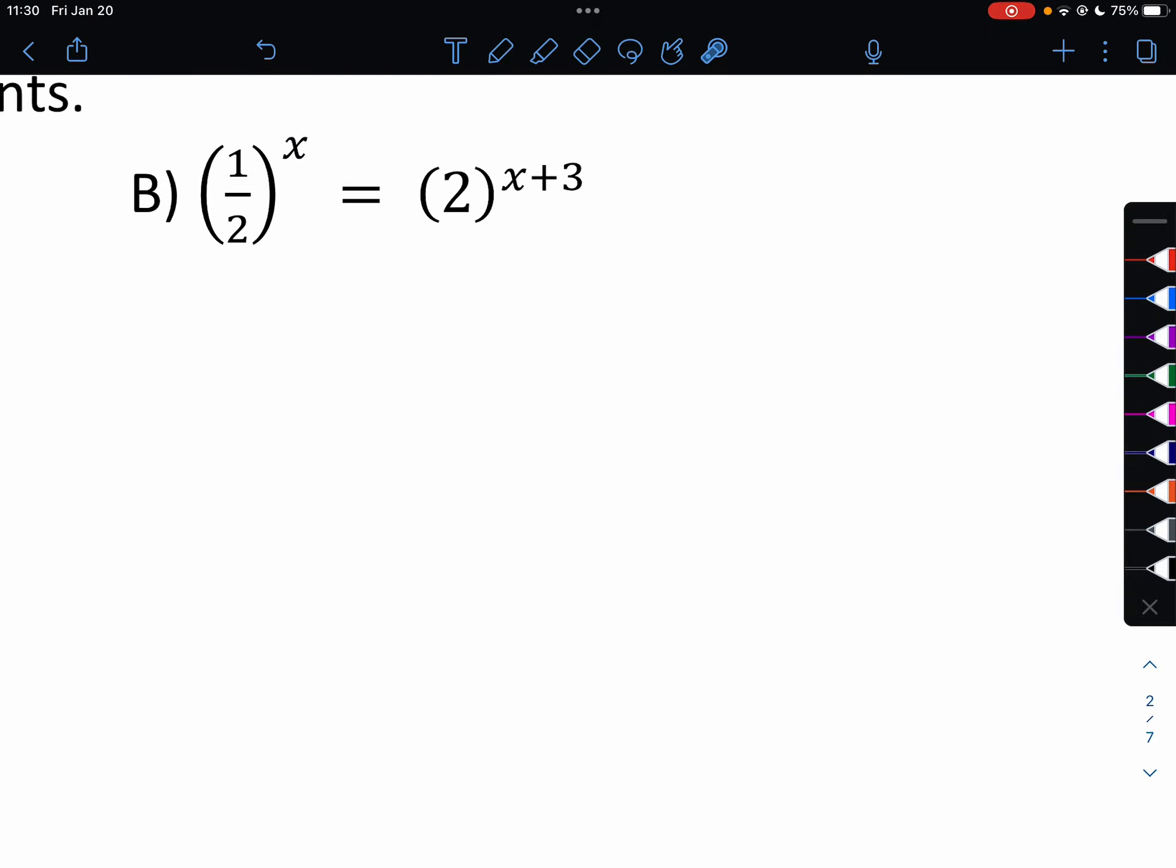Both of these are powers of 2. So it would be 2 to the negative 1 to the x equals 2 to the x plus 3. So it's going to be negative x equals x plus 3. Negative 2x equals 3. Negative 3 halves.